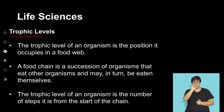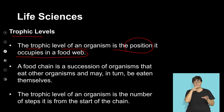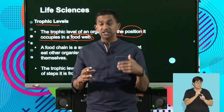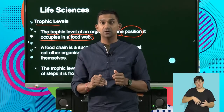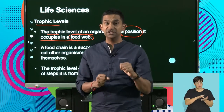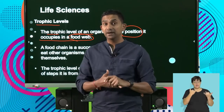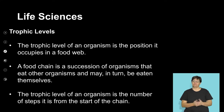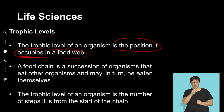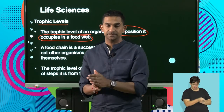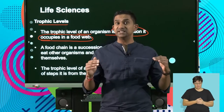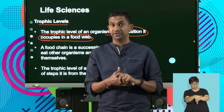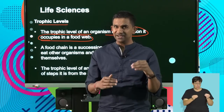The trophic level of an organism is the position it occupies in a food web. In a food chain, an organism may occupy a specific role — such as secondary or tertiary consumer — but that position may change in a complex food web. The trophic level is the number of steps an organism is from the start of the food chain, and the position an organism occupies within a feeding sequence is known as its trophic level.